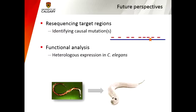The future perspectives are that once I've determined loci that are under selection, I will also have to pinpoint the causal mutation. We will be re-sequencing those interesting loci to ultimately identify causal mutations. Finally — potentially outside the scope of my project — we'll be using functional analysis in C. elegans through heterologous expression to see if those mutations indeed confer resistance.